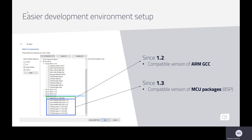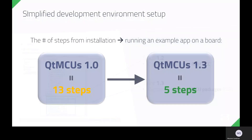We've now included the list of Qt-supported MCU targets, easily selectable during installation. In addition, the steps required from the time of installation of Qt for MCUs to actually running an example application on the target hardware has been significantly streamlined. In our first release, 1.0, there were a total of 13 steps. Today, with version 1.3, the number of steps has decreased to 5. These enhancements save valuable time, allowing our customers to begin testing and deploying applications much faster.